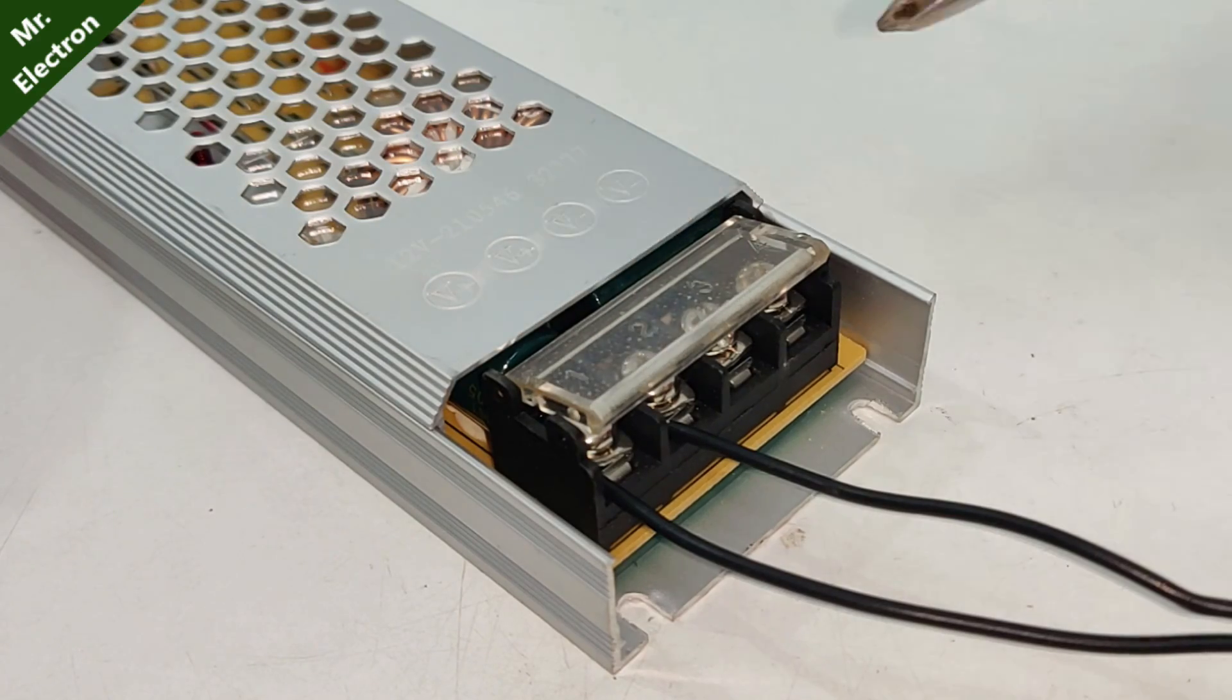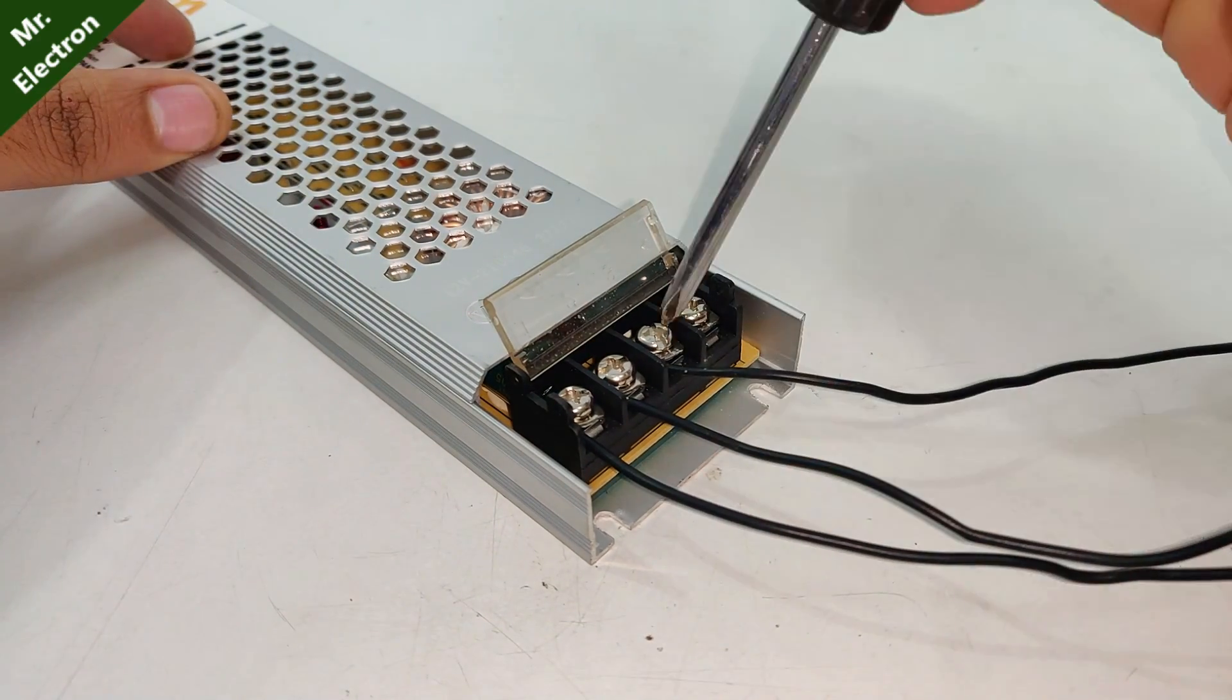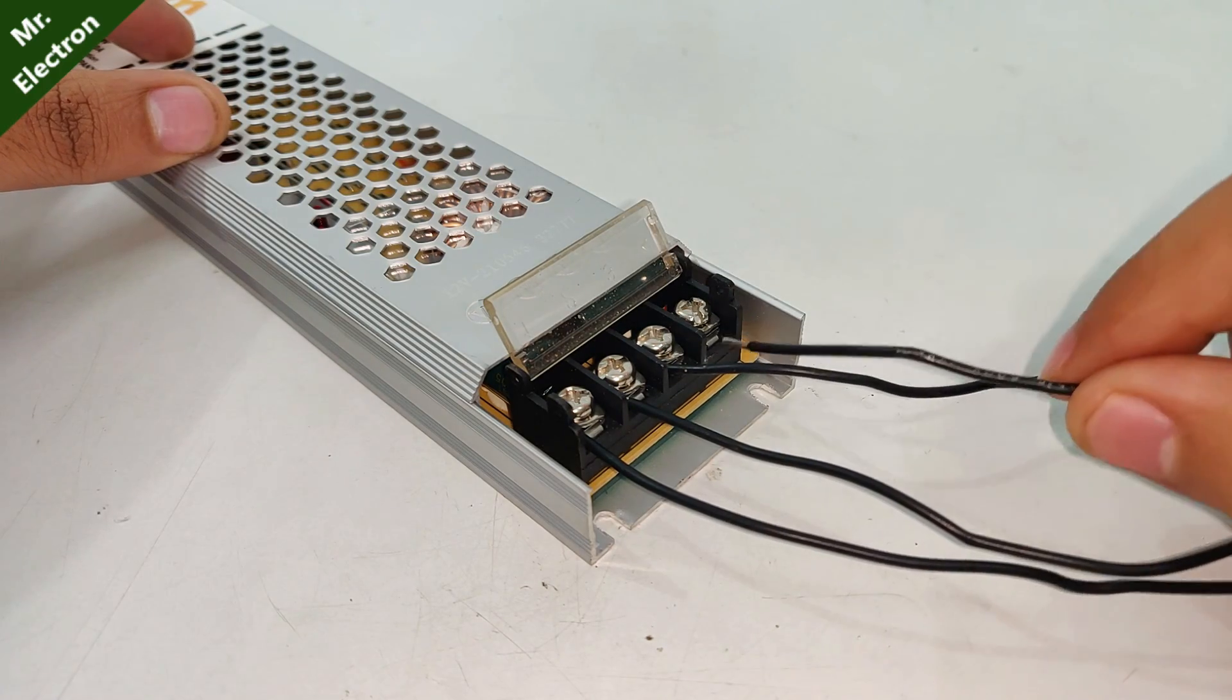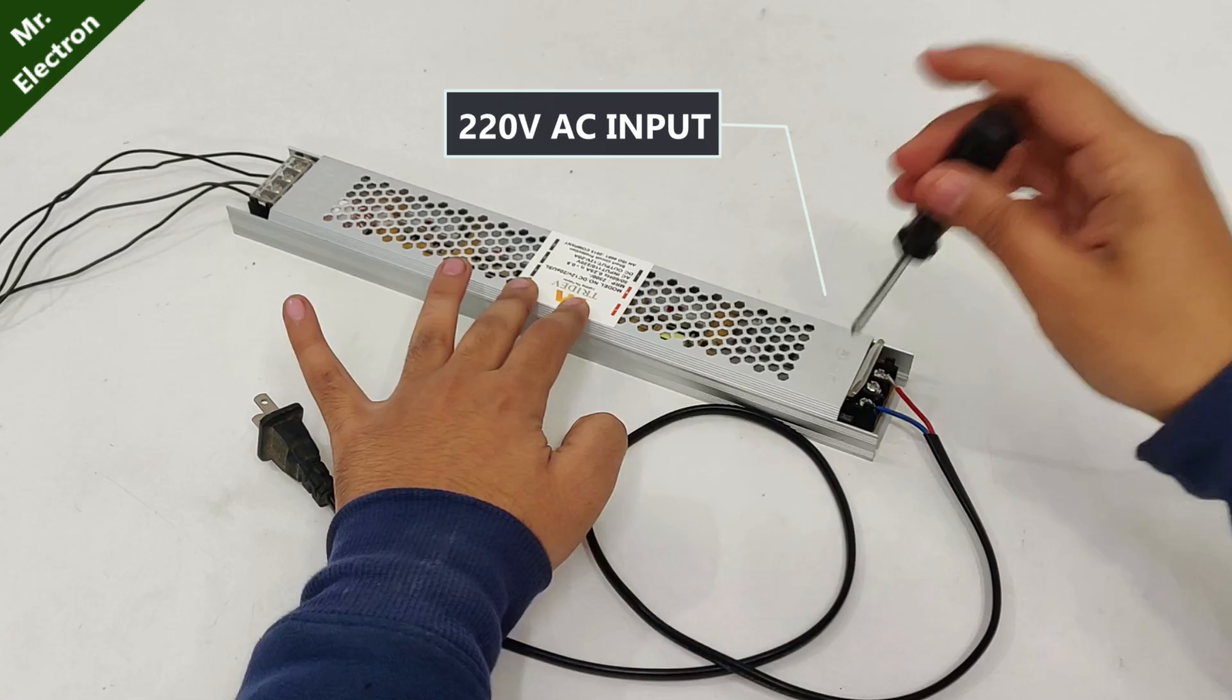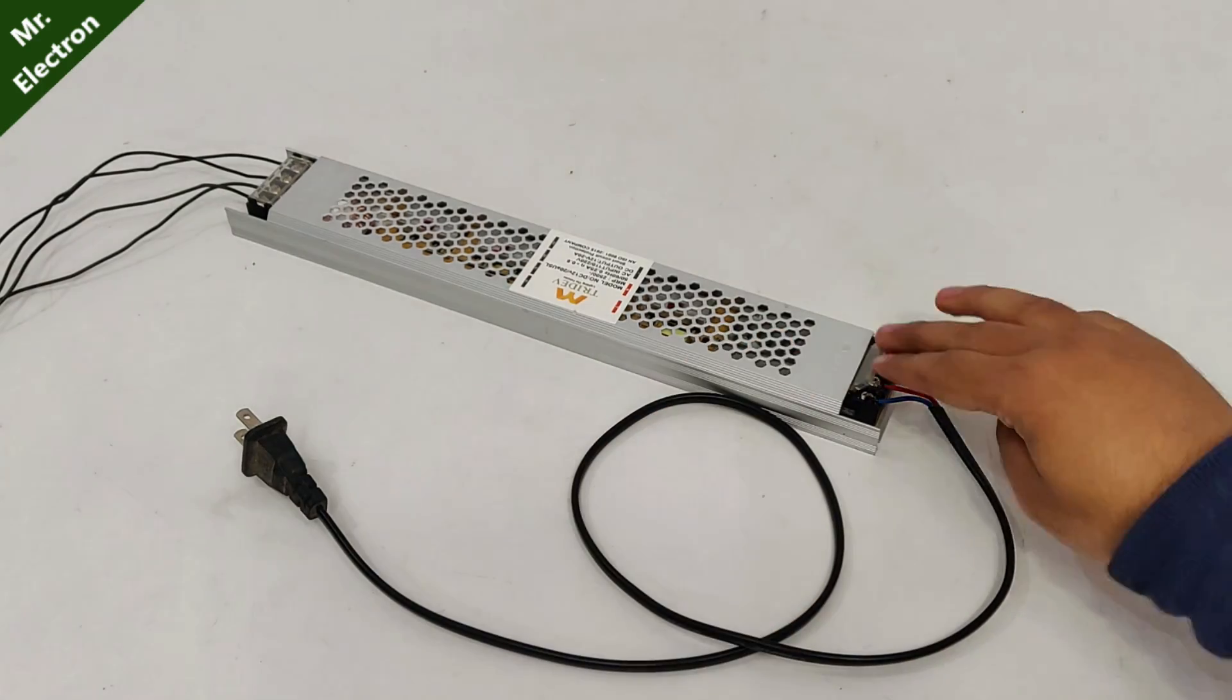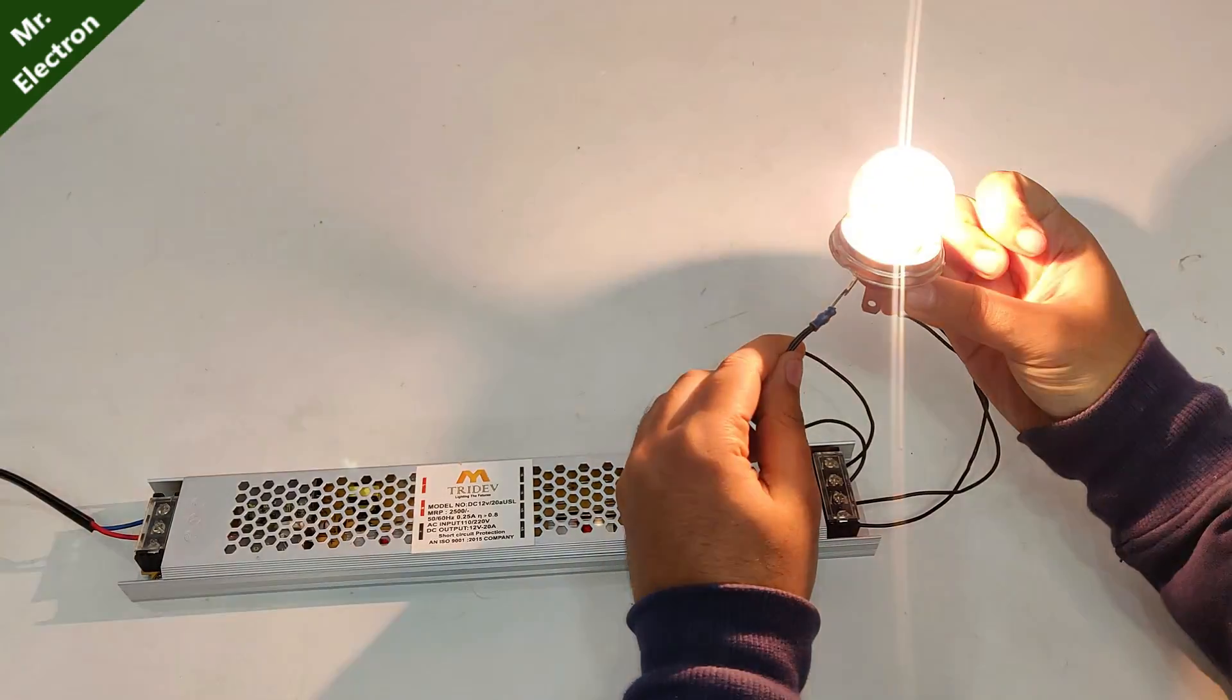Positive, negative. Connecting the AC input side 220 volts, turning it on. As you can see that it is working and the bulb is glowing quite bright.